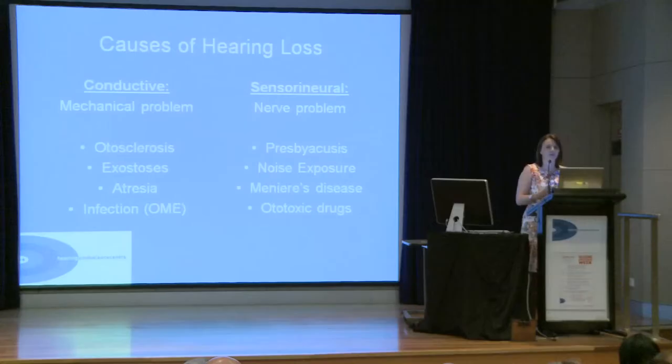As Dr Biggs covered, there are many different causes of hearing loss. There are two main types: conductive hearing loss or sensorineural hearing loss. A conductive hearing loss is essentially a mechanical problem — something physically stopping the sound getting through to the cochlea — and that can be something like otosclerosis, exostosis, atresia, or infection. Sensorineural hearing loss is more damage to the cochlea or the nerve, which can be presbycusis (age-related), noise exposure, Meniere's disease, or ototoxic drugs — drugs that are toxic to the cochlea.